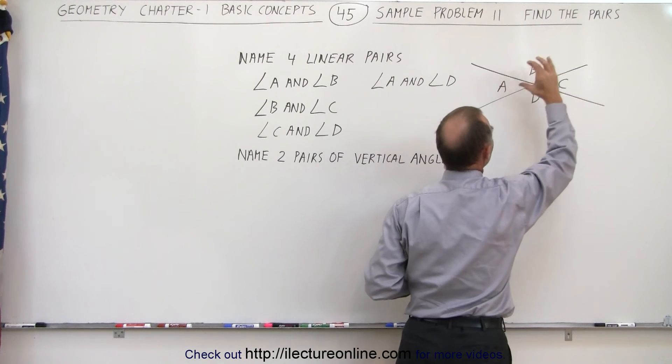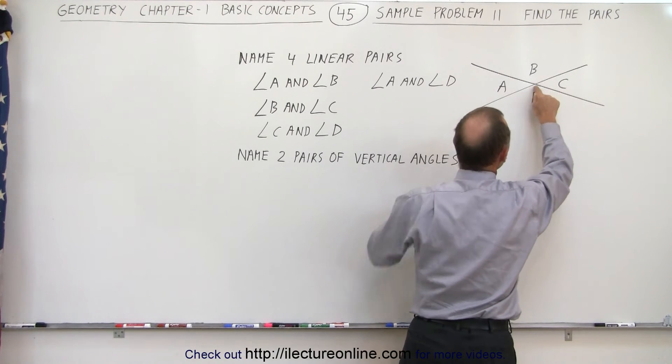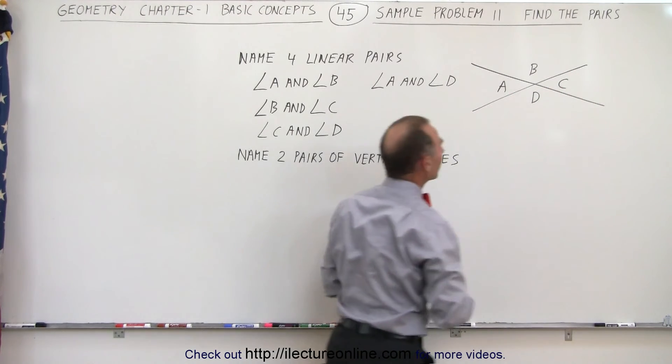So the measure of angle A has the same as the measure of angle C. They touch at the vertex and they're opposite to one another.